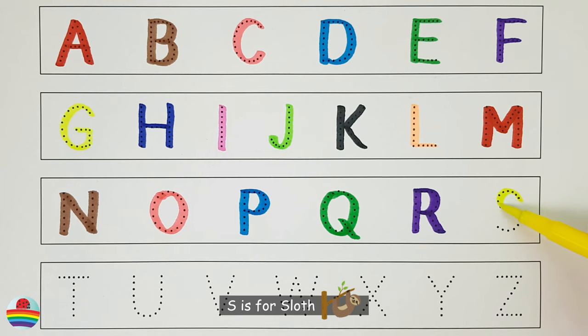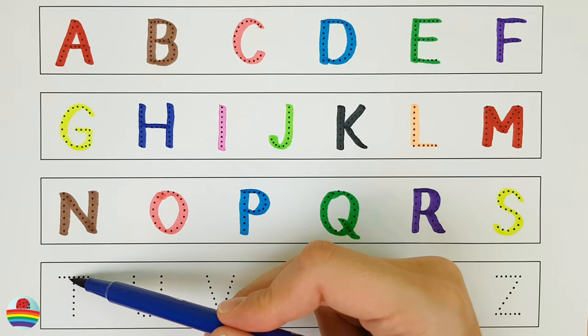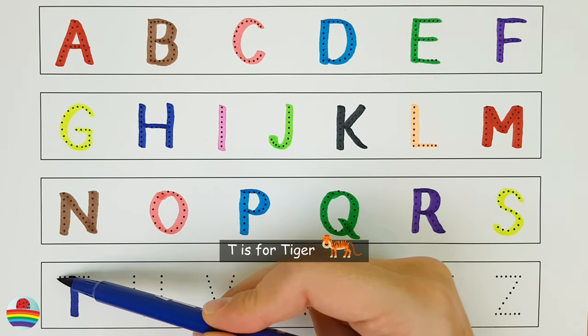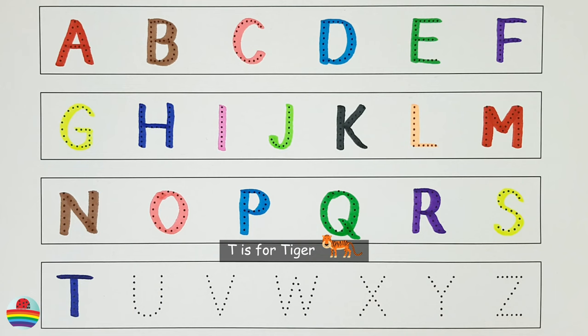S. S is for sloth. S. T. T is for tiger. T.